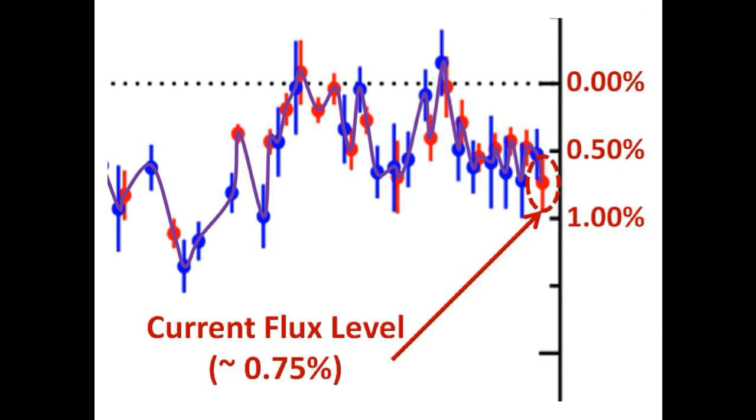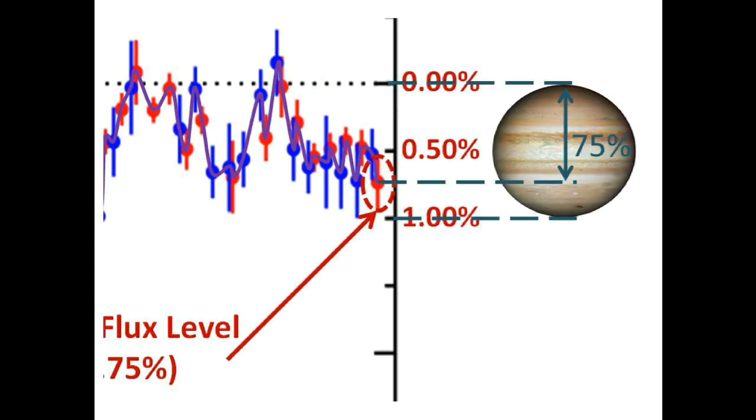But as a rule of thumb, a Jupiter-sized planet would block approximately one percent of a star's light. Whatever has brought us down to these current levels is equivalent to about 75 percent of the light blocking effectiveness of a Jupiter-sized planet. So we will continue to watch and report this.